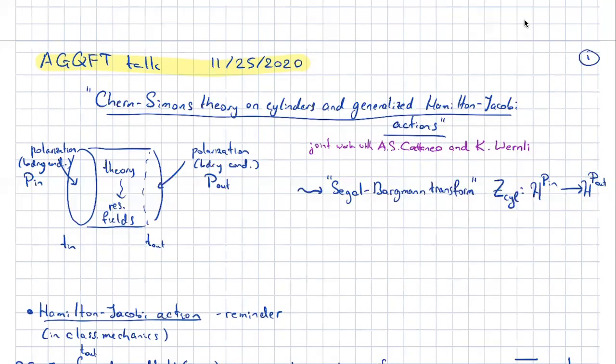There will be a connection of this quantum computation with a classical story about Hamilton-Jacobi actions and generalized Hamilton-Jacobi actions, which is the counterpart for systems with constraints.